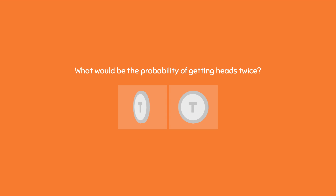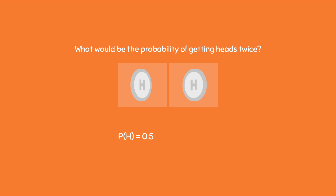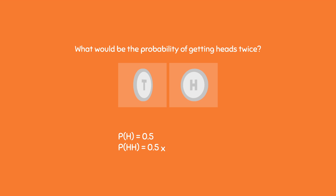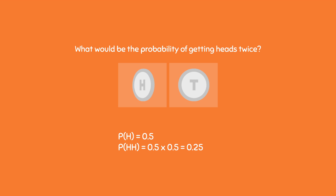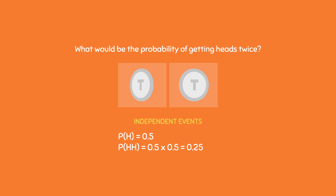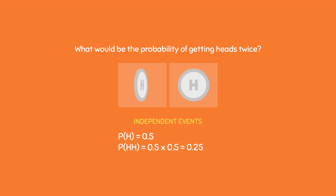Now if I flip the same coin 2 times, what would be the probability of getting heads twice? Since we already know that the probability of getting 1 head is 0.5, the probability of getting 2 heads is just 0.5 times 0.5, which is equal to 0.25 or 25%. The reason we can multiply these two numbers together is because they are independent events, but we will touch on that in the next video. We can also solve this problem using a different method.